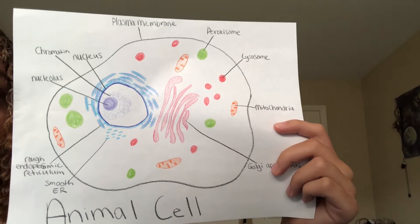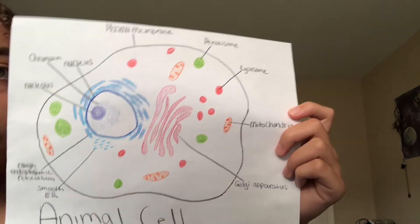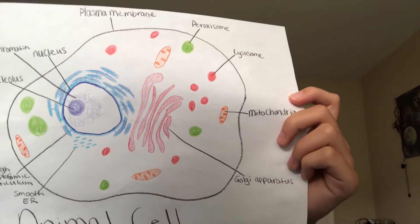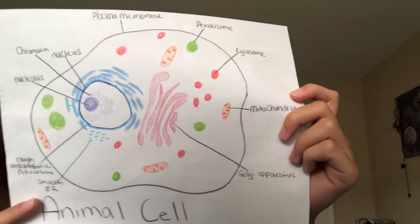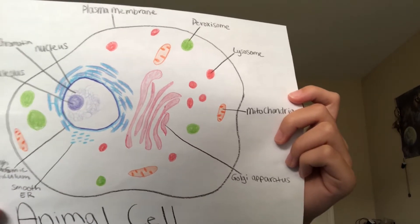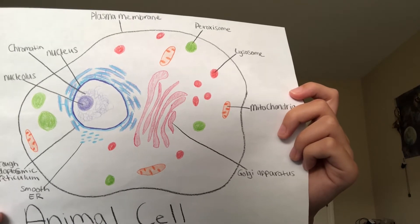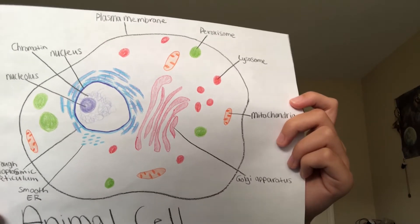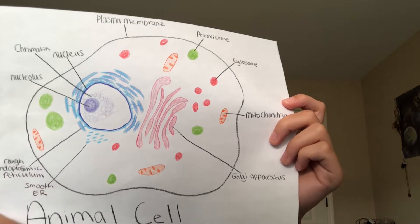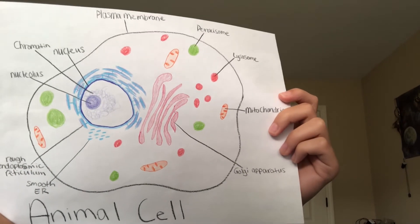These red circles are the lysosomes, which is the digestive system of the cell. It breaks down and digests the macromolecules in the cell, repairs the cell membrane, and responds against foreign substances like bacteria and viruses.